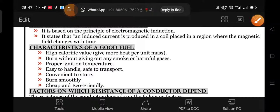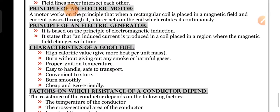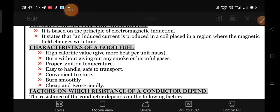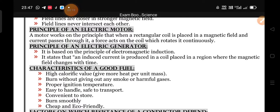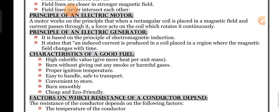Principles of an electric generator and the principle of an electric motor. These are one mark or two mark very important questions. Principle of electric motor: A motor works on the principle that when a rectangular coil is placed in a magnetic field and current passes through it, a force acts on the coil which rotates continuously. This is the principle of electric motor.